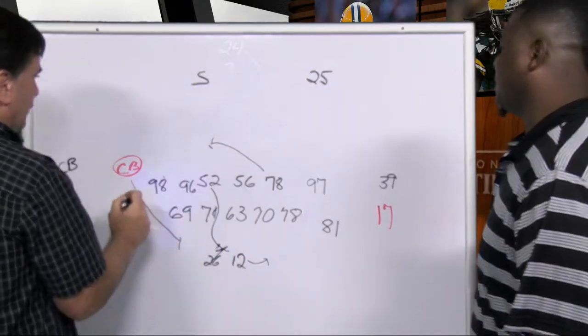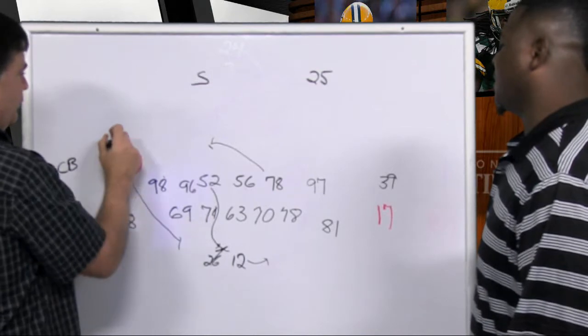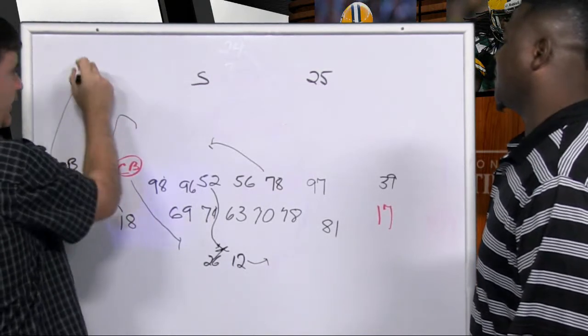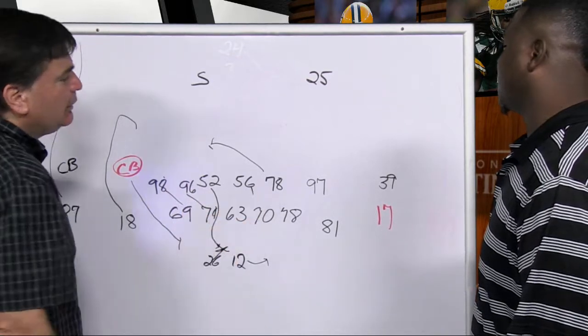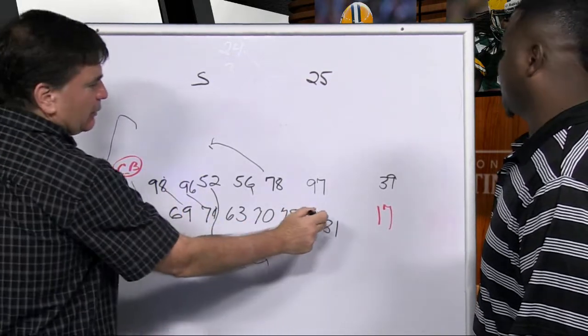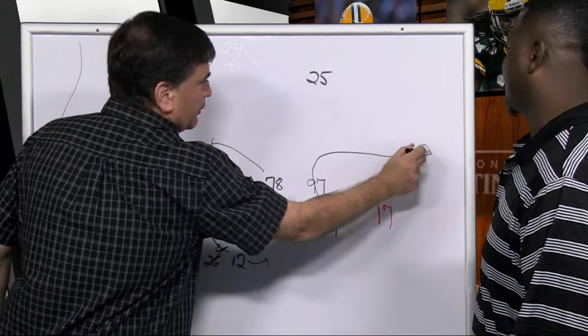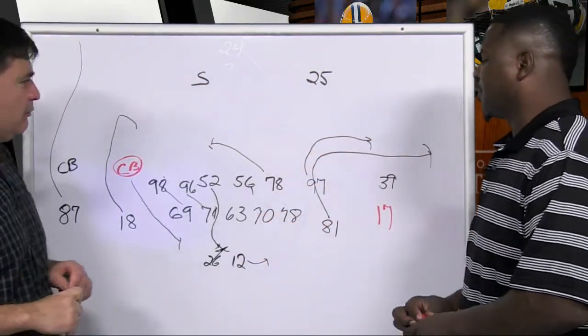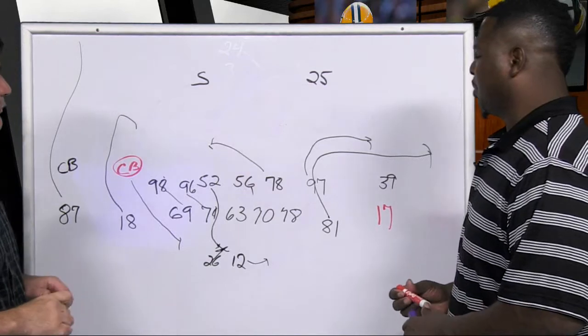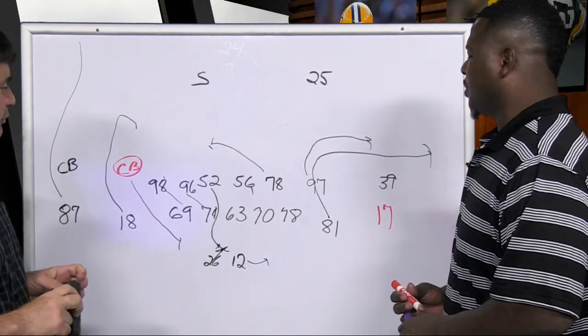We got a little bit of a zone look there. Randall Cobb comes here and stops, and the rest of the guys just come in. Corliss ran this route here, and this guy kind of followed him. So tell me what you liked about what Adams did on this play and how it developed.